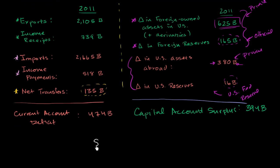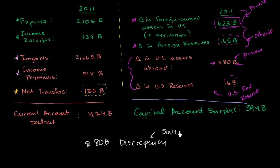So we have an 80 billion dollar discrepancy. For most people that's a fairly large discrepancy, but if we're talking about an economy the size of the United States — on the order of 15 trillion — it's not that huge. You have to think about how all of this is measured: they do surveys, they sample things, they're getting numbers from all different sources, so it's reasonable to have some statistical discrepancy. In theory, if you're running a current account deficit, then you should have that exact same amount in a capital account surplus, and vice versa. The difference here is just a statistical discrepancy by the Bureau of Economic Analysis.